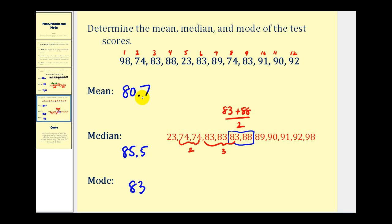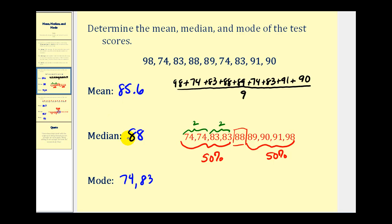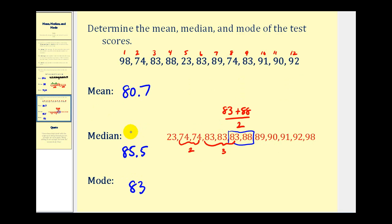Going back to the previous problem, notice that the mean and median were pretty close in value. In this example, the difference between the mean and the median is larger. The reason the mean is so much lower is because one test score is really low, and it has a very large impact on the mean but doesn't have as much impact on the median. That's one of the reasons why it's so important to have more than one statistic to describe a set of data. Values that are really large or really small compared to most of the other values are sometimes called outliers, and they can have a much larger impact on the mean than they do on the median.